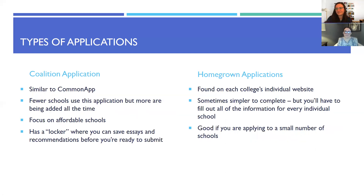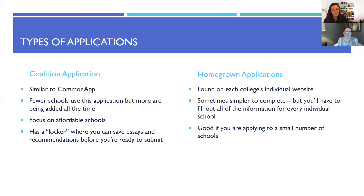The Coalition Application is less common but similar to the Common App. It's only been around since about 2015, with more schools being added all the time — about 70 schools nationally take a transfer application through Coalition right now, and UMass Lowell is one of them. The focus is on affordable schools and college access for normally underrepresented populations. If you qualify for a Pell Grant and use the Coalition Application, all your application fees are automatically waived. A cool feature is a locker area where you can save essays, recommendations, and score reports before you're ready to upload.